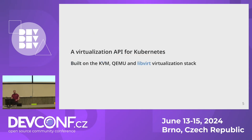So, KubeVirt — what is it? The line on the website is that it's a virtualization API for Kubernetes. It's an extension for Kubernetes that allows folks to run virtualized workloads alongside containerized workloads. It's built on the KVM, QEMU, and LibVirt virtualization stack. I've highlighted LibVirt because some of the complexities in our API come from inheriting some of the domain XML complexities from LibVirt — we copy and paste it in places and cause our own trouble.